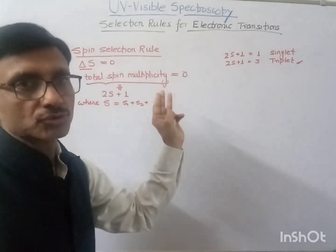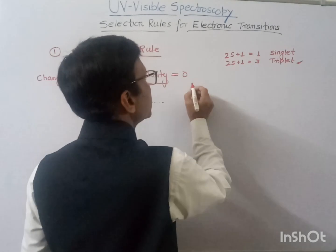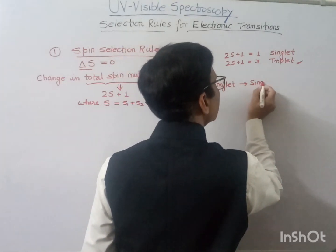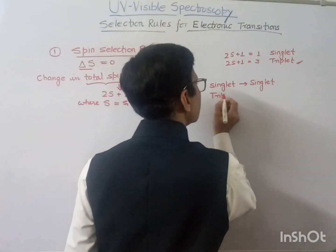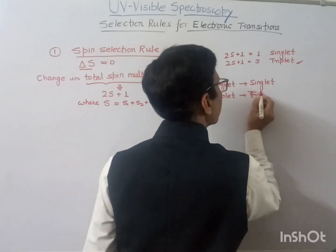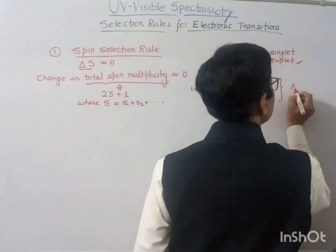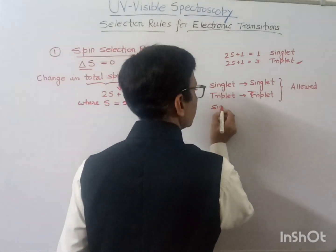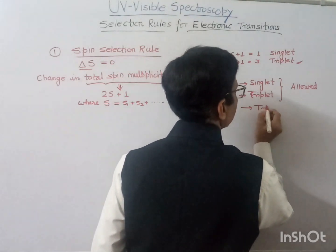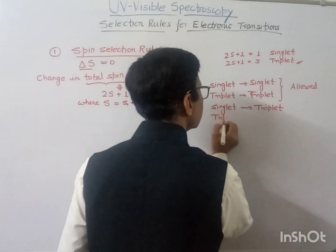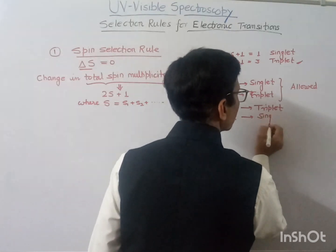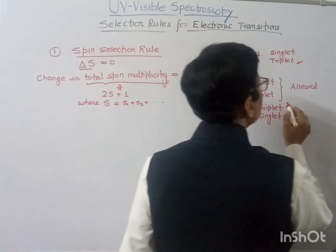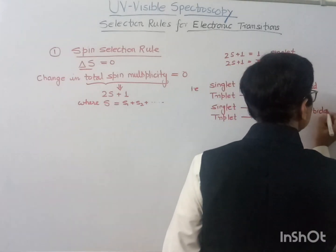According to this rule, the total spin multiplicity should not change, meaning singlet to singlet is an allowed transition, and triplet to triplet is also an allowed transition. However, singlet to triplet is not allowed, and triplet to singlet is not allowed, because in these cases the spin multiplicity is changing — making them forbidden transitions.